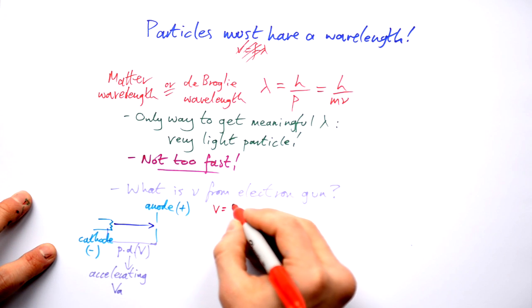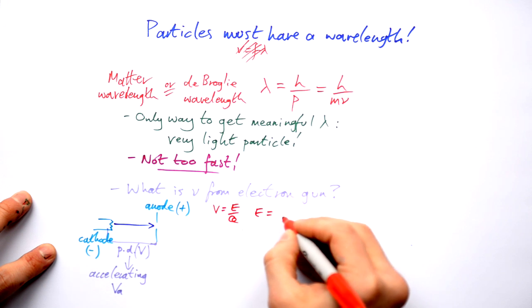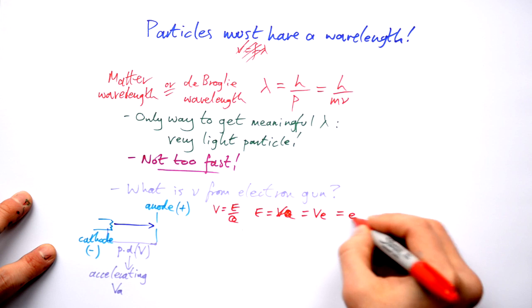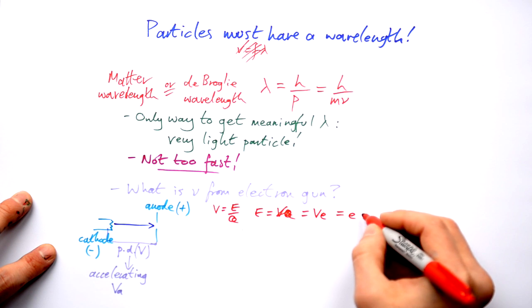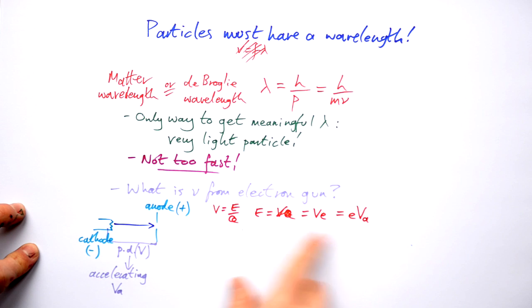Now we know that voltage is energy per unit charge so that means that energy is voltage times charge. In this case it's going to be equals to the charge that's E 1.6 times 10 to the minus 19 times the accelerating voltage. What kind of energy is given to the electron? Well that's going to be kinetic energy.